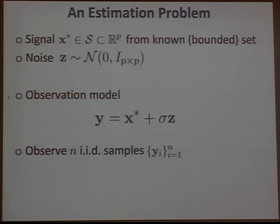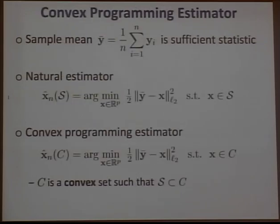Getting to specifics, the simplest estimation problem we considered was the normal means problem: a signal corrupted by Gaussian noise, where the signal comes from a known set. The signal lives in p-dimensional space, comes from a known set S, and you observe n IID samples. The sample mean is a sufficient statistic, and a natural estimator is to take the sample mean and project onto the signal set S.